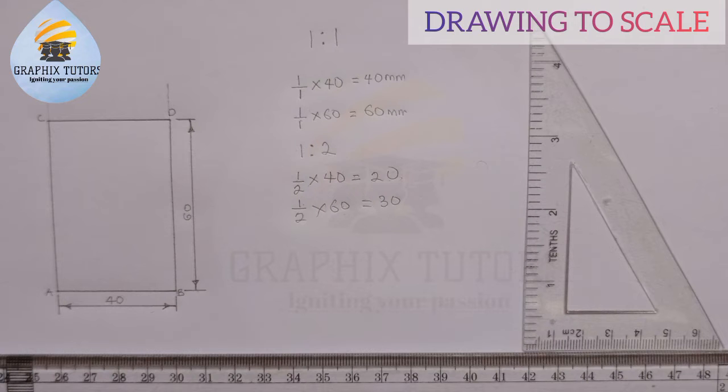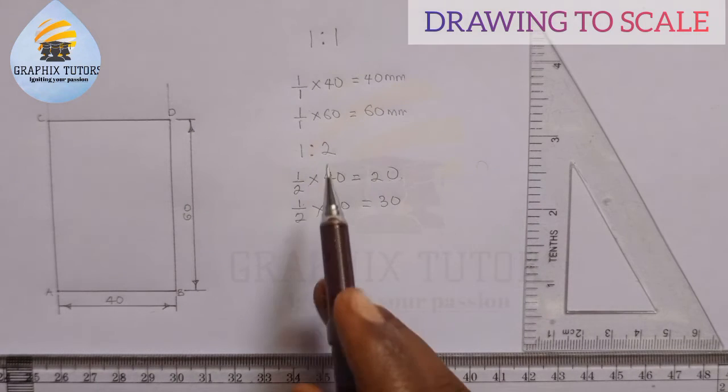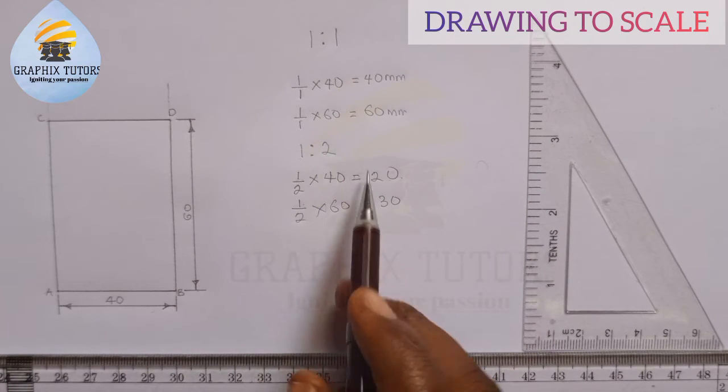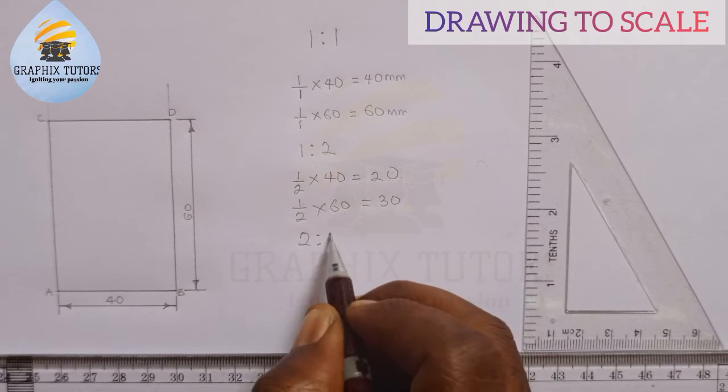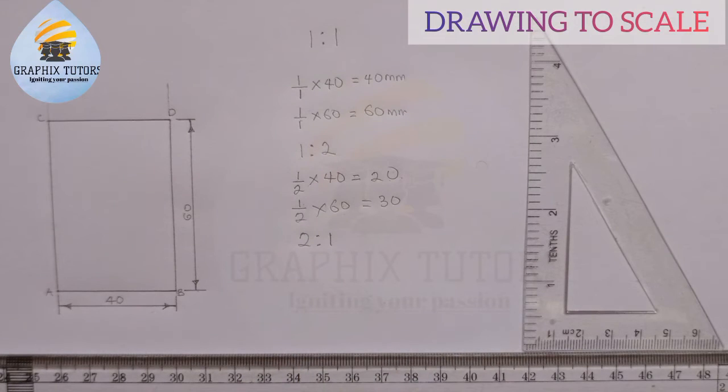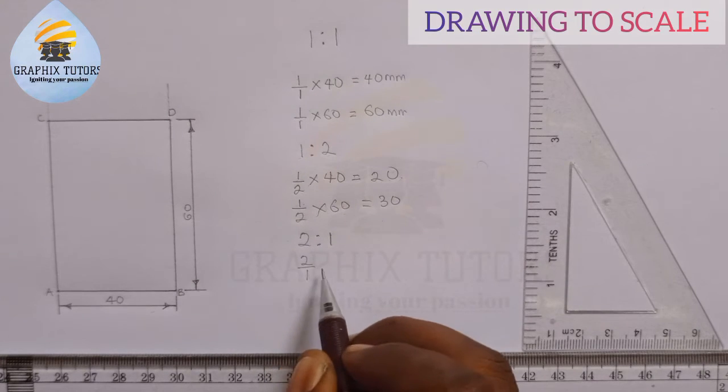Now let's take another one again and see what happens when the two comes forward and the one goes behind. I'm having two ratio one. What does this mean? It means two all over one of the distance I was given.